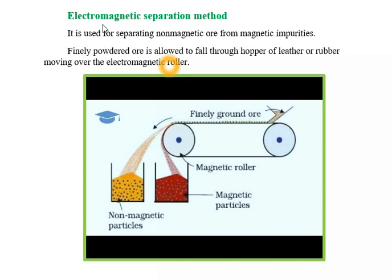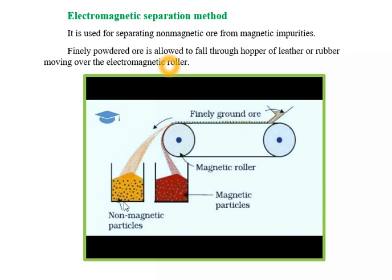The second process is electromagnetic separation method. This process is used for separation of non-magnetic ore from magnetic impurities. The fine powdered ore is allowed to fall through a hopper. These particles are passed on a roller. As it contains a magnet, the magnetic particles are collected near the hopper, whereas the non-magnetic particles fall away and are collected in another container.